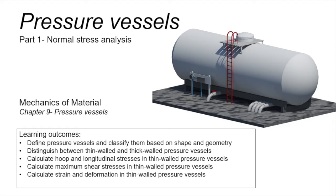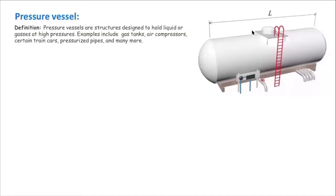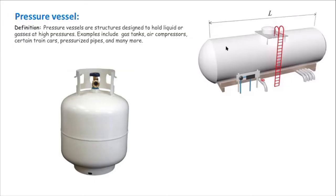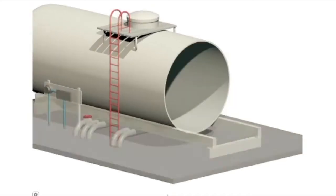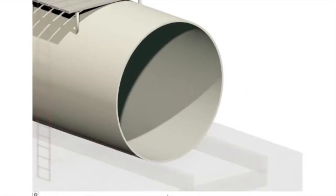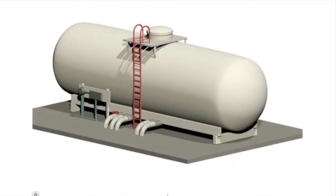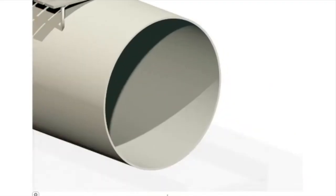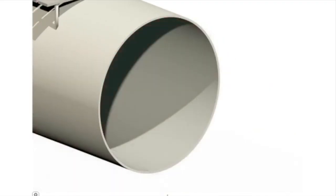We want to do the same for pressure vessels, but before that, we want to understand what pressure vessels are. Pressure vessels are elements used for holding gas or liquids at high pressure. For instance, a propane tank holds propane gas at typically high pressure, and that internal pressure applies forces on the wall. We want to understand what types of stresses are developed and how to design that tank so it doesn't break because of internal pressure.